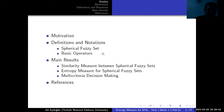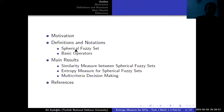My presentation is about an entropy measure based on similarity measure for spherical fuzzy sets and its application to multiple decision-making programs. My presentation consists of three sections. The first section, I try to give an answer for why we study this subject. In the second section, I will give the basic definitions, and in the last section, I will give our main results.